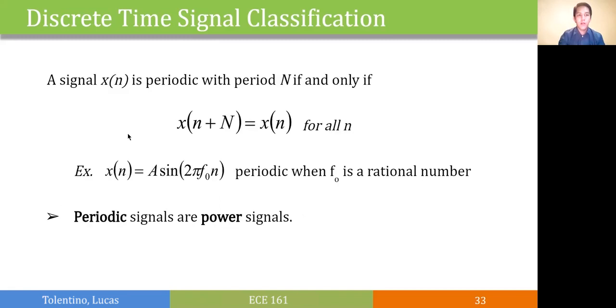We also classify signals as periodic or aperiodic. A signal x of n is periodic if and only if a shifted signal by a factor of N, which is the period, could still be the same as x of n. The most common example for this are sinusoids, for example a sine 2 pi f naught n where f is a rational number. For every period, the sinusoid will be the same. As mentioned earlier, periodic signals or oscillating signals are classified as power signals.